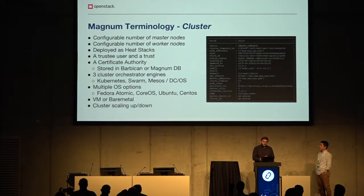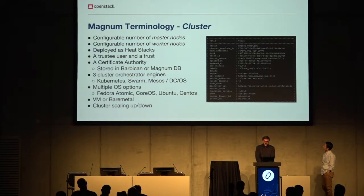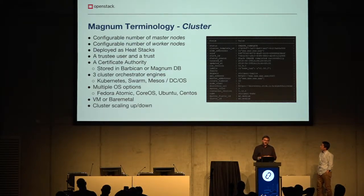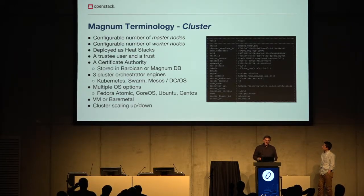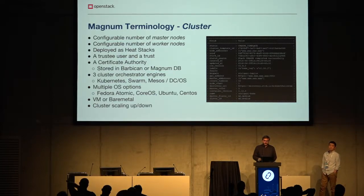A cluster is created from a cluster template and inherits all its options, plus you can pass some extra ones. The cluster has a number of master nodes and worker nodes, and in the OpenStack cloud this is represented by a Heat stack — all orchestration is managed by Heat, delegated directly from Magnum. The Heat stack may contain load balancers, private networks, and virtual machines or volumes.